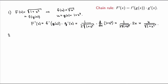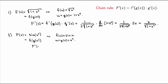Second example: sin(x²). This is also a composite function — the outer function is sine, the inner function is x². Using the chain rule, I first differentiate the outer function to get cosine evaluated at the inner function, so cos(x²), then multiply by the derivative of the inner function, which is 2x. The final result is 2x · cos(x²).